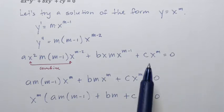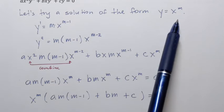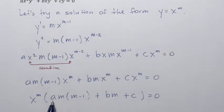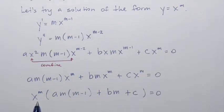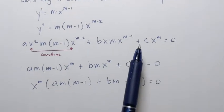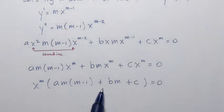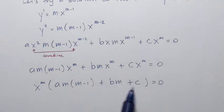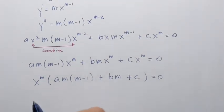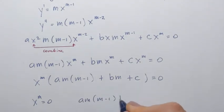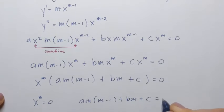Plus c times x to the power m equals 0. Each term contains x to the power m as a common factor, so we factor it out. What remains is: x to the power m times [a m(m minus 1) plus b m plus c] equals 0. We assumed this is a solution, so we need to find which values of m satisfy this equation.